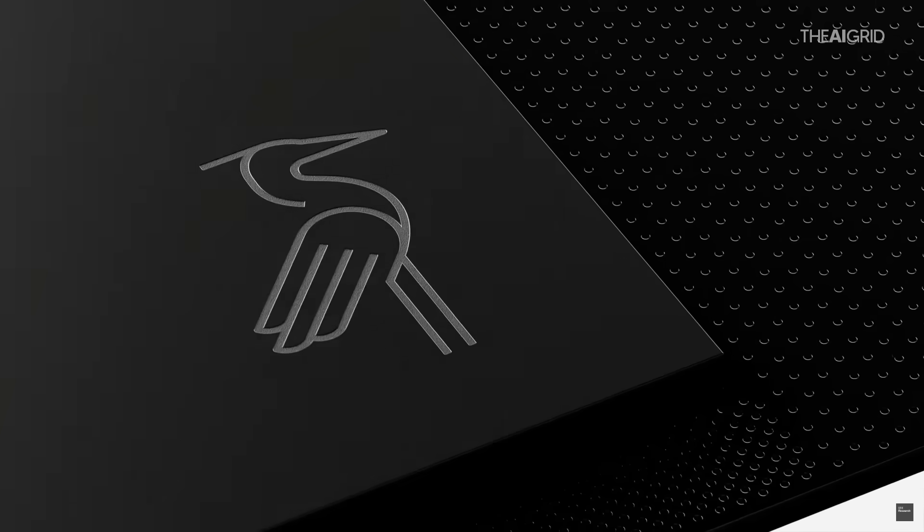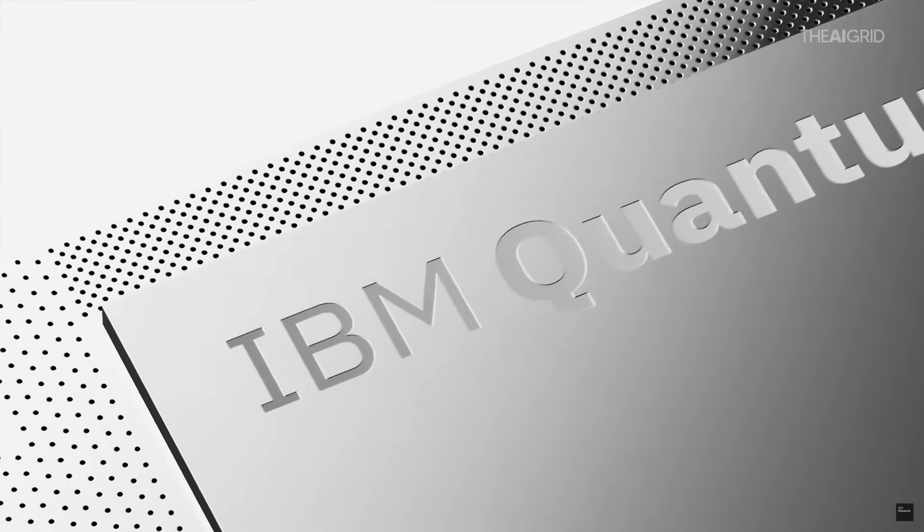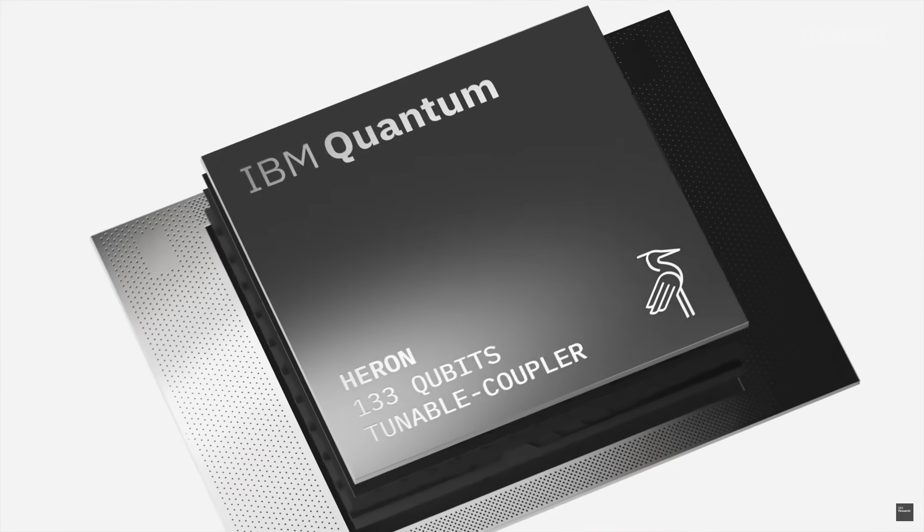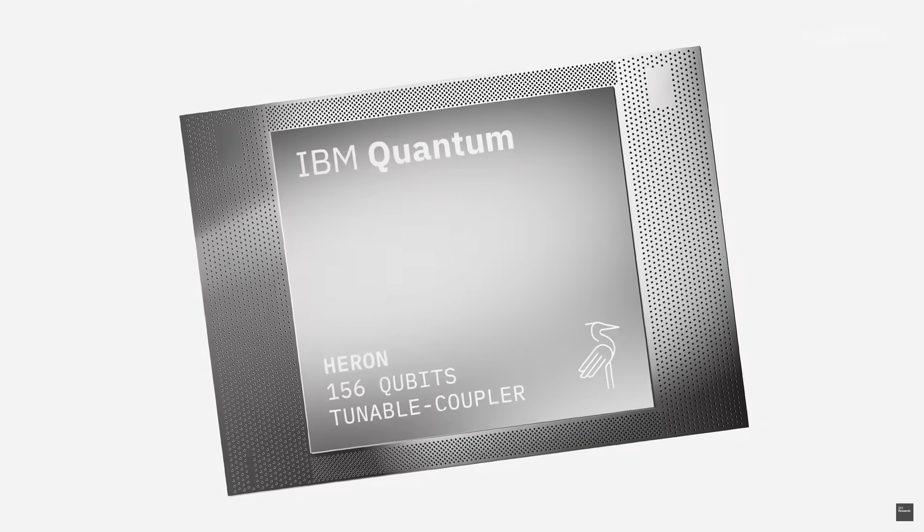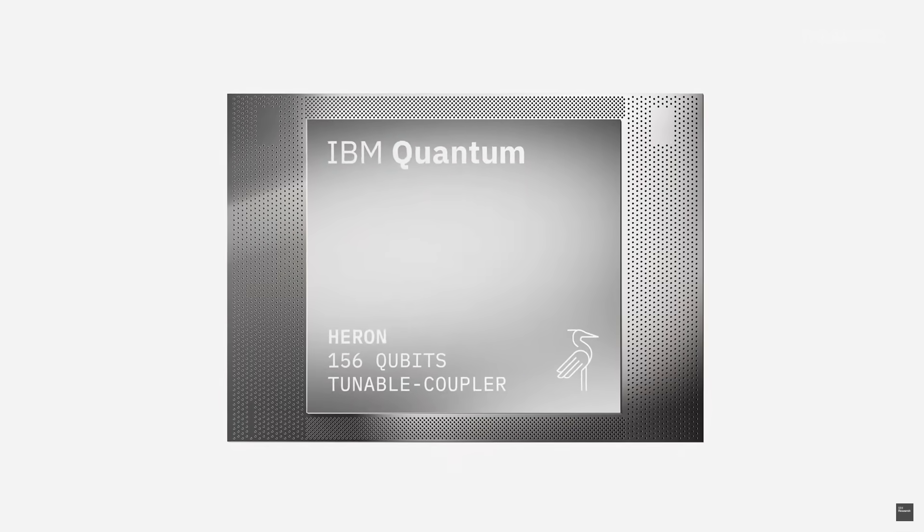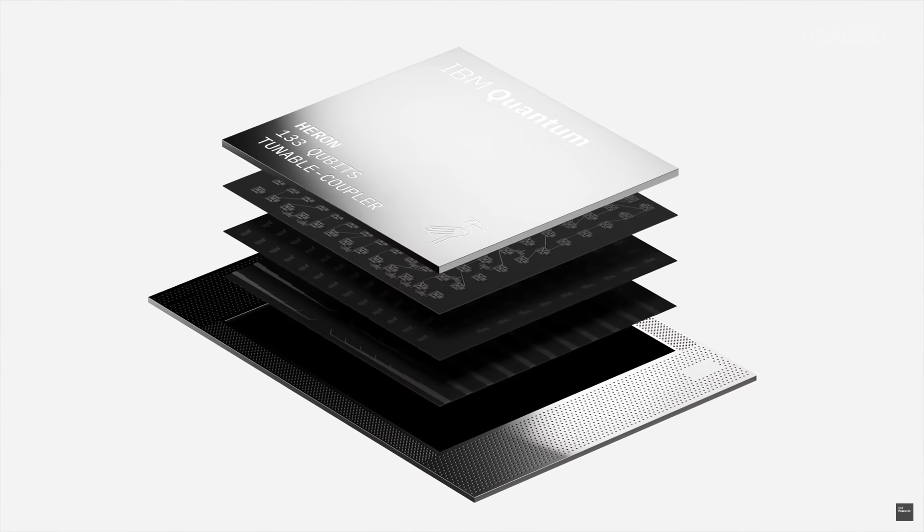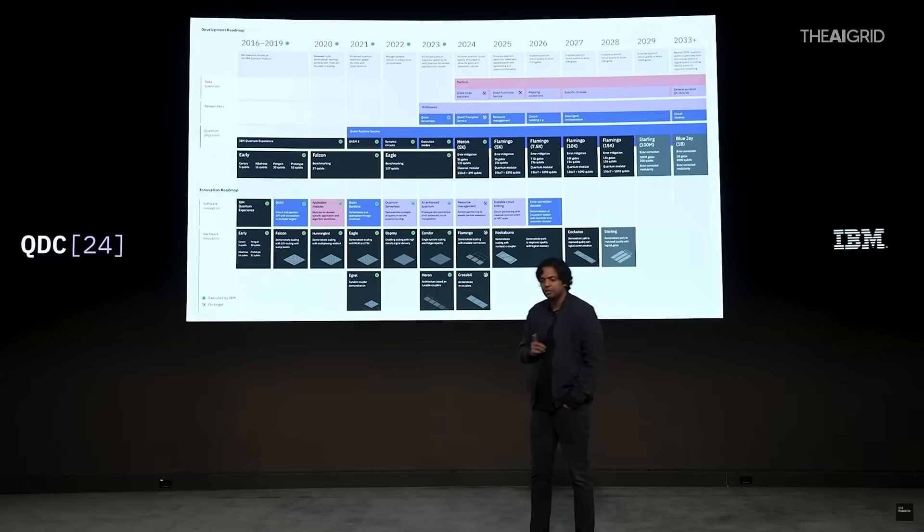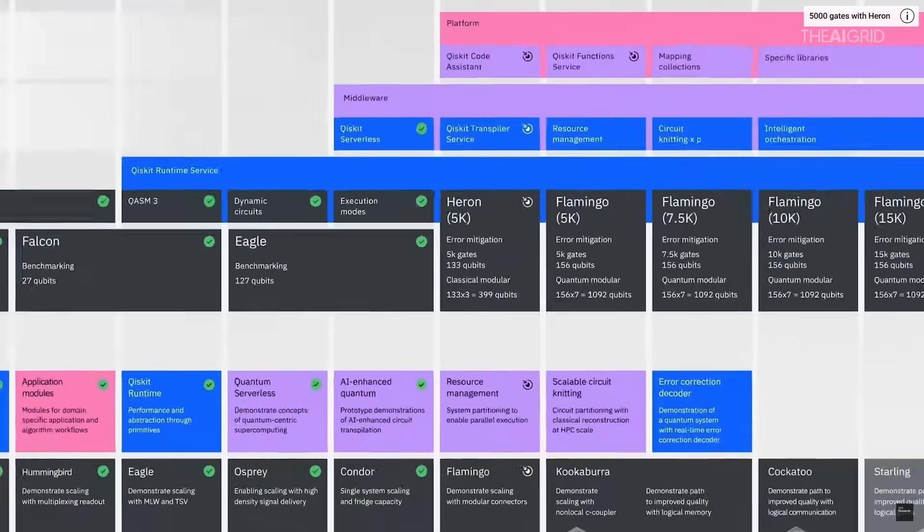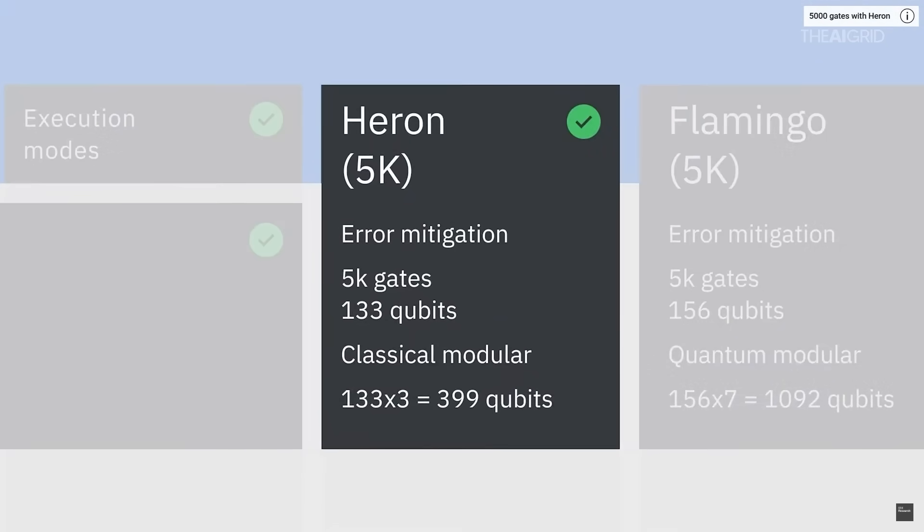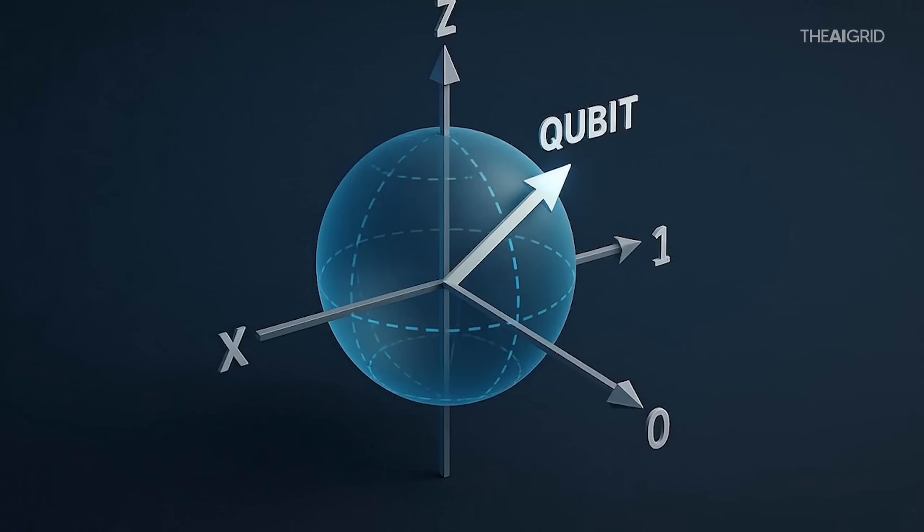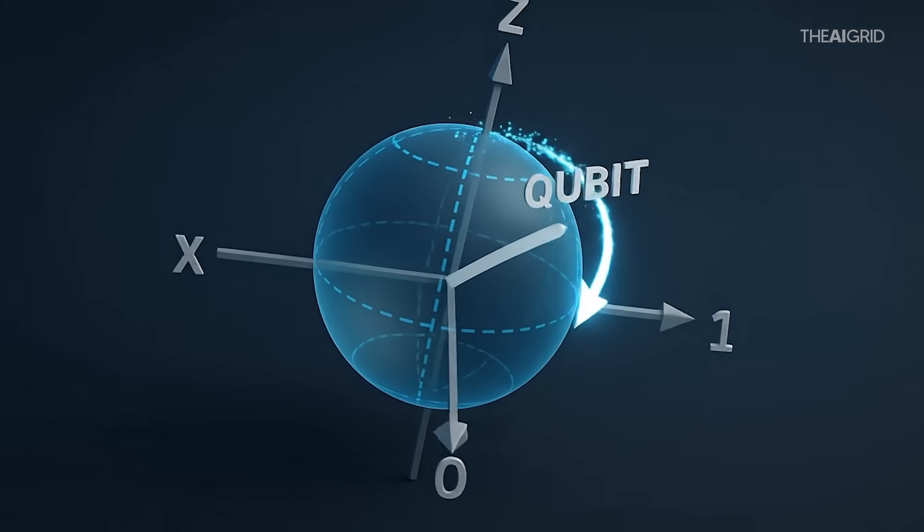The big problem: why quantum computers are basically useless without help. So remember how we just discussed that qubits are fragile? Well, that fragility creates a huge problem. Quantum computers make mistakes. They make a lot of mistakes. Imagine if every time you typed on your keyboard there was a one percent chance that the wrong letter would appear. That might not sound like much, but if you're writing a novel, you'd actually end up with total gibberish. For quantum computers, these errors pile up fast. Scientists call this quantum error correction, and it's one of the biggest challenges in quantum computing.